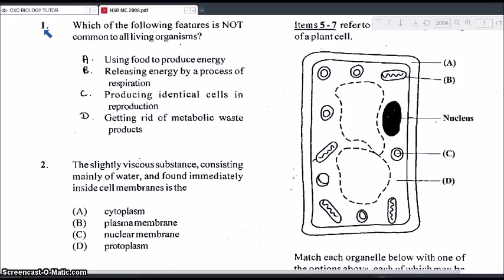Question 1. Which of the following features is not common to all living organisms? Is it A, using food to produce energy, B, releasing energy by a process of respiration, C, producing identical cells in reproduction, or D, getting rid of metabolic waste products? So through a process of elimination, you should know that C would be the correct answer because not all living organisms would be producing identical cells in reproduction. That is asexual reproduction. So that is not common to all living organisms. All of the other features are common.